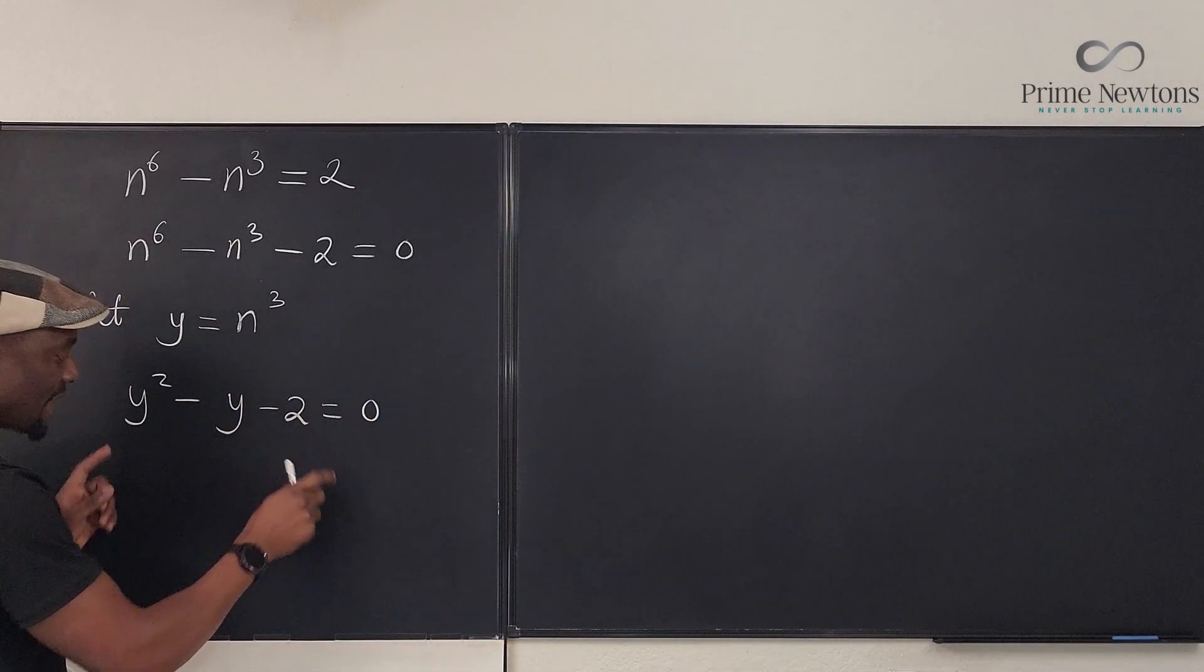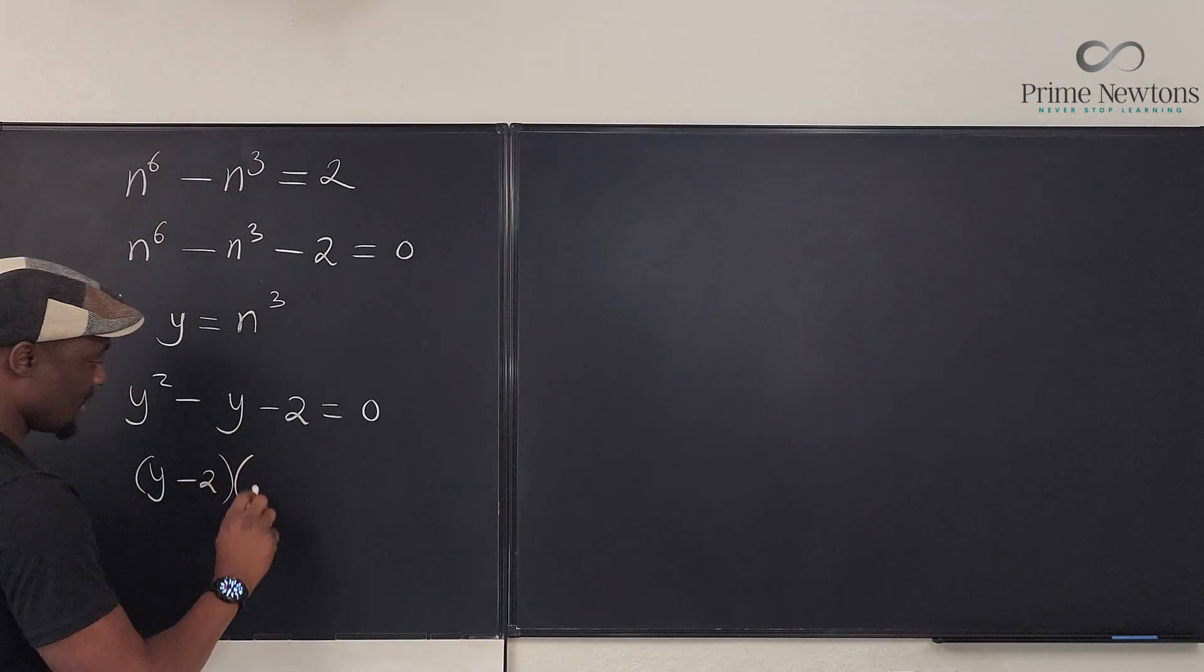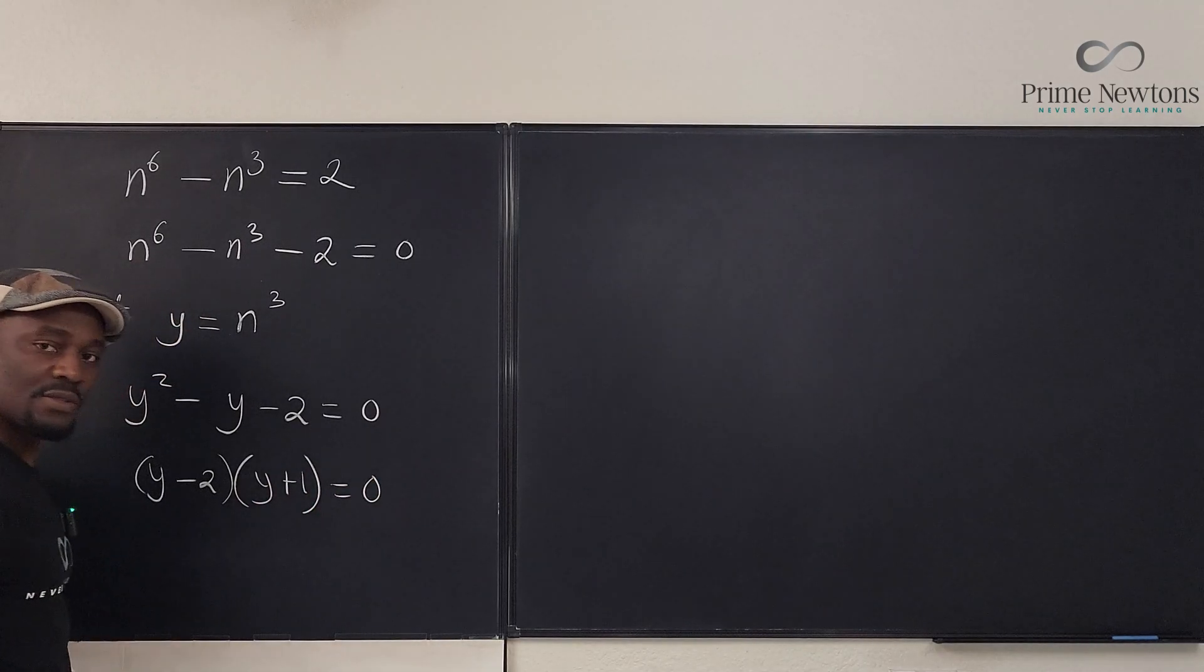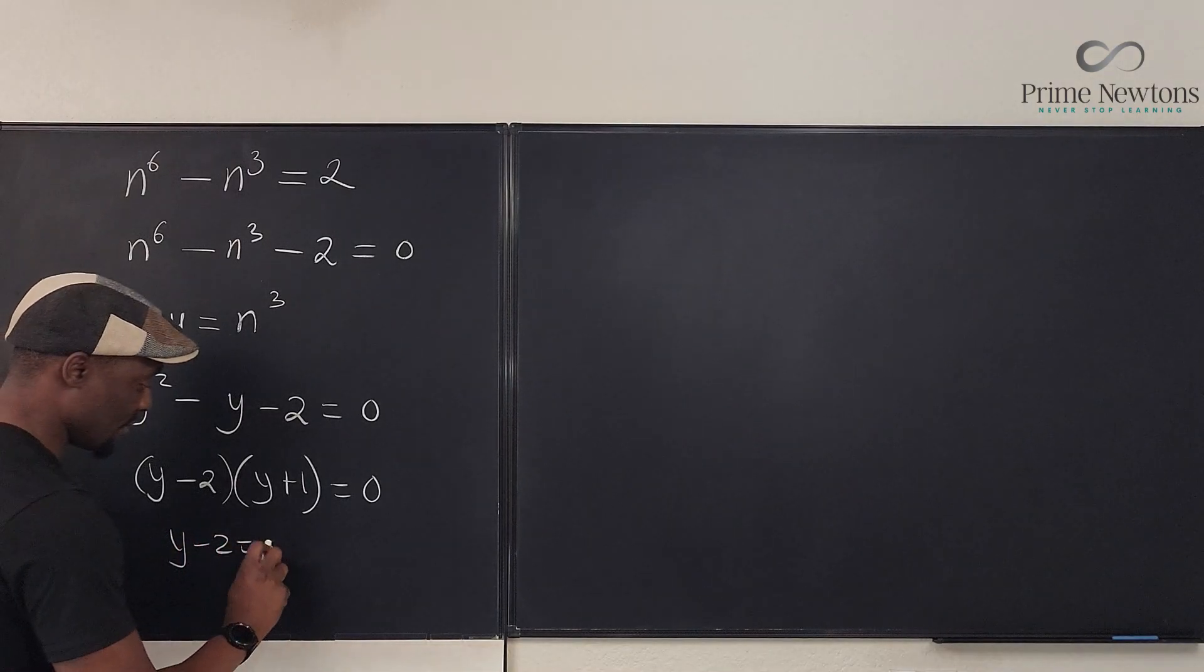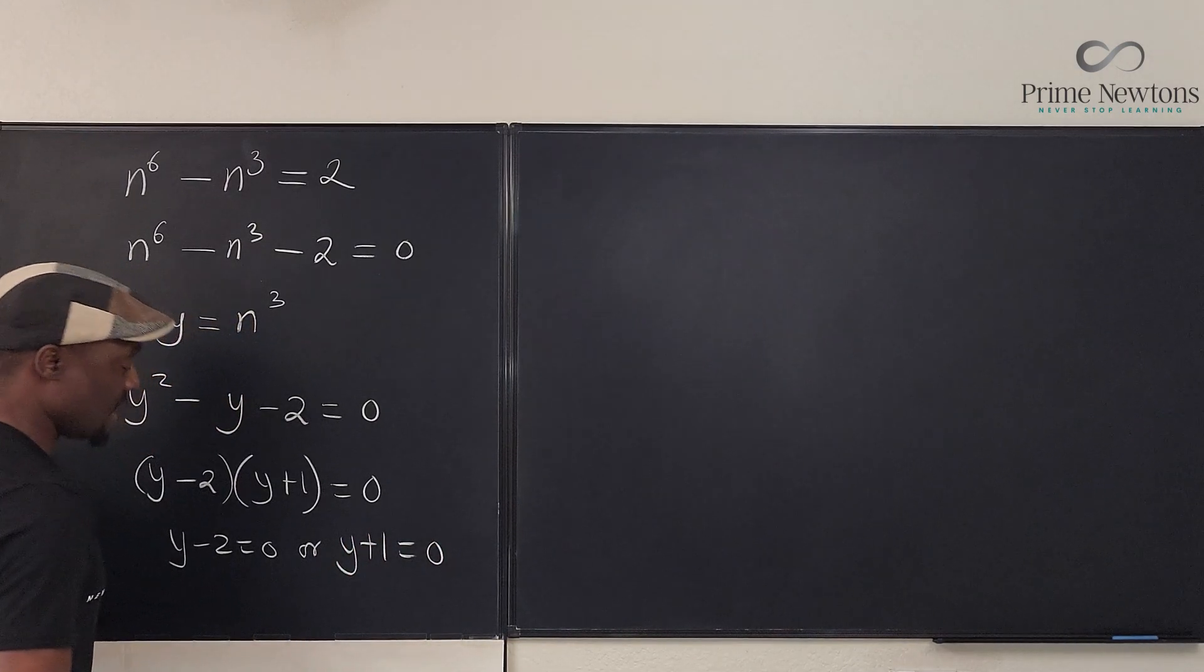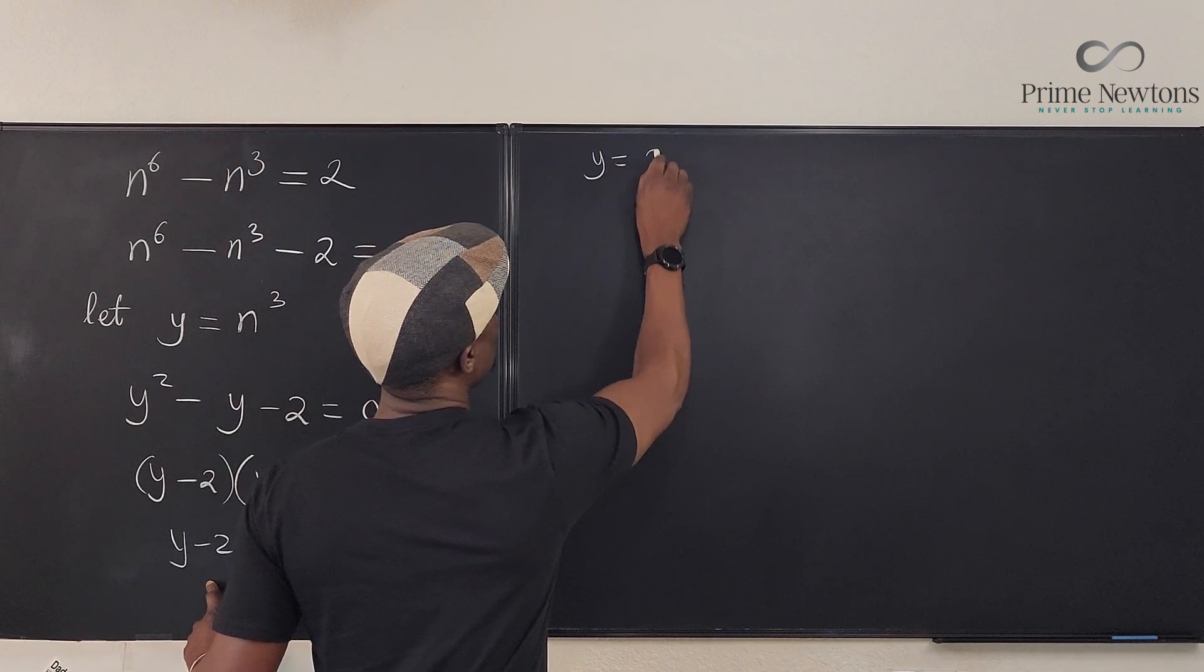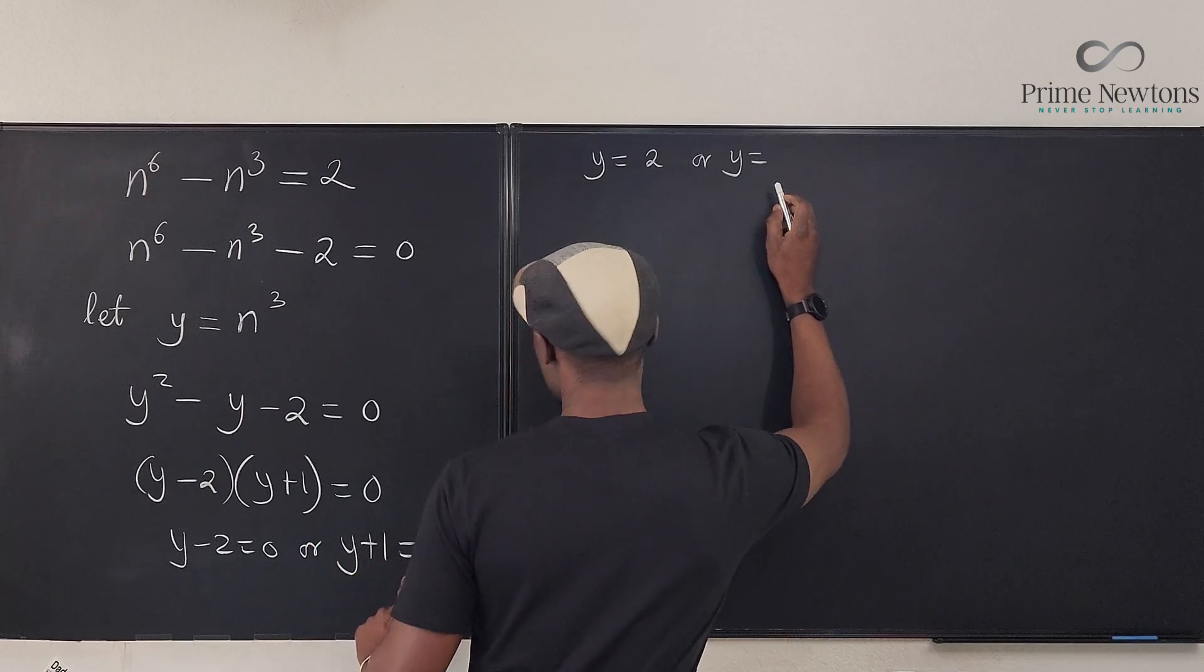And if we factor this, we're going to end up with (y - 2)(y + 1) = 0. So, it means that y - 2 = 0, or y + 1 = 0, giving us two possible solutions: y = 2, or y = -1.